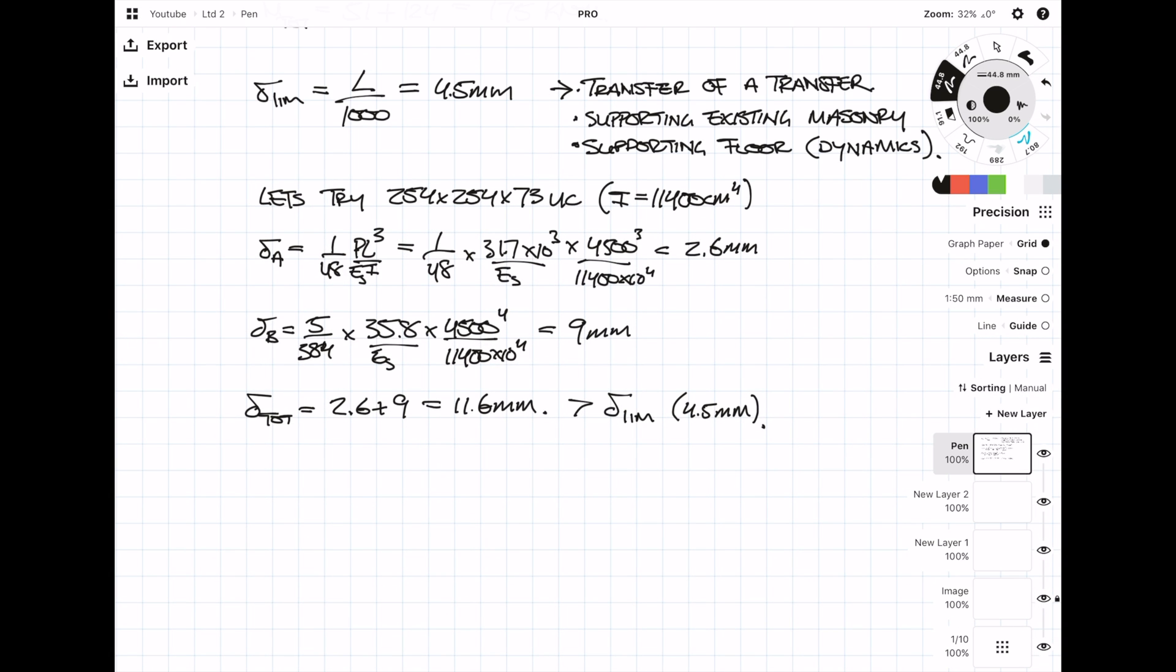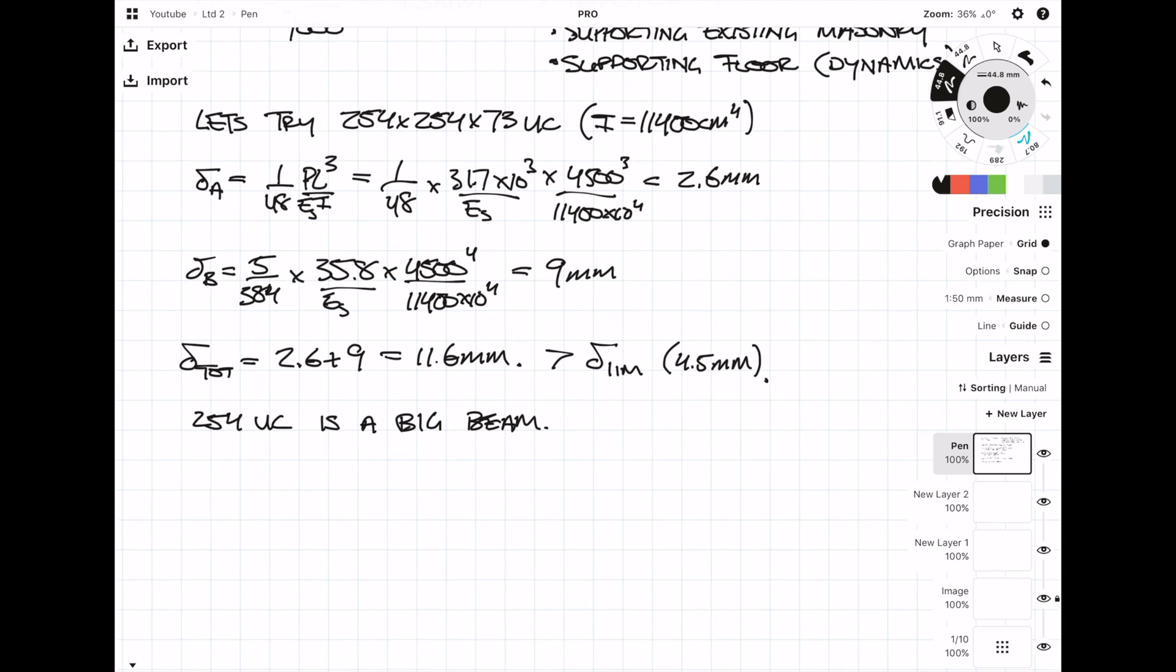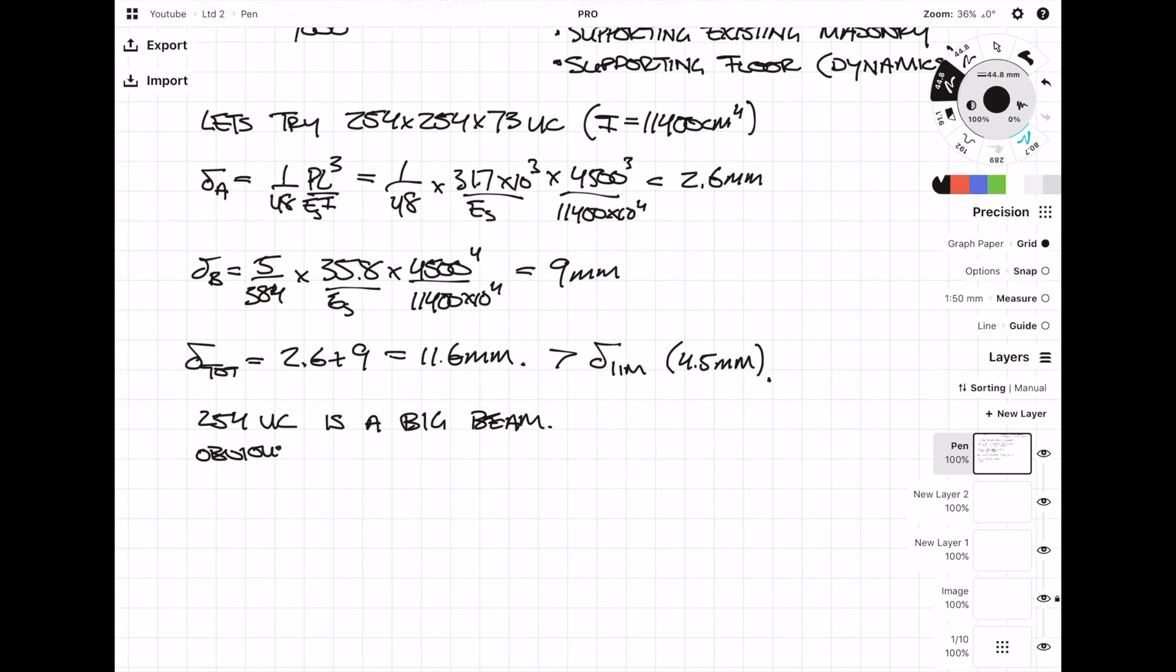A 254 UC is already a pretty big beam and it's really heavy as well, so it's going to be quite hard to handle. The obvious thing to do would be to just increase the weight or increase the size of the beam to make it work. But before I go and do that, I'm going to go back and try and see where I can thin down the design a little bit.